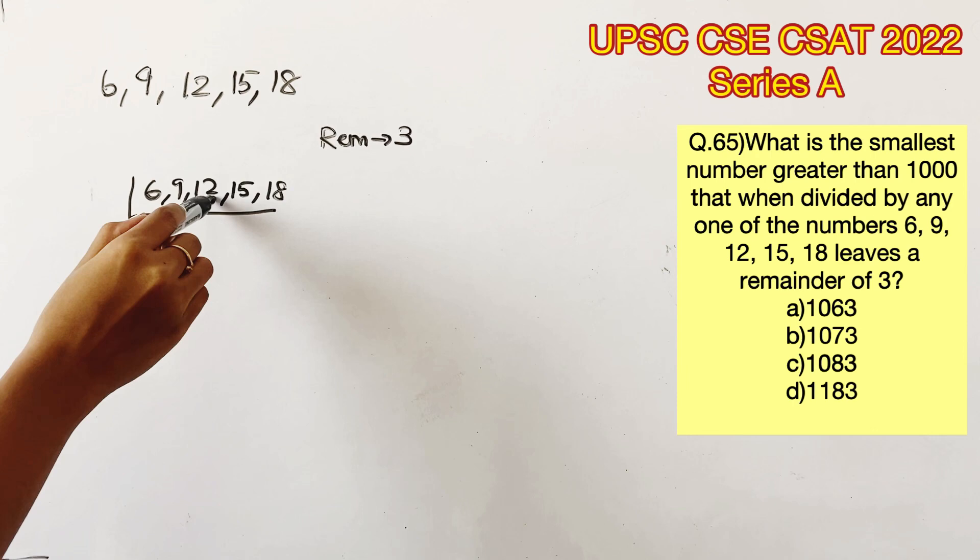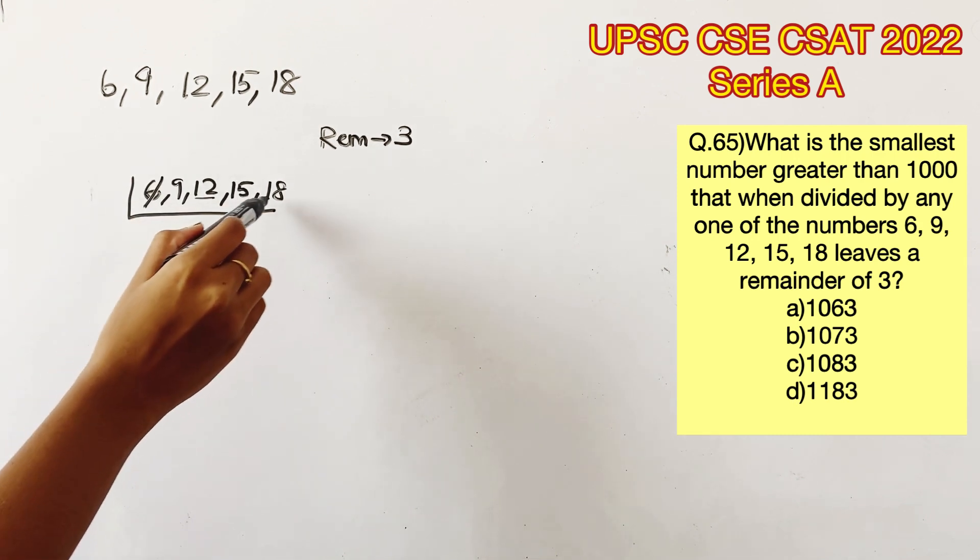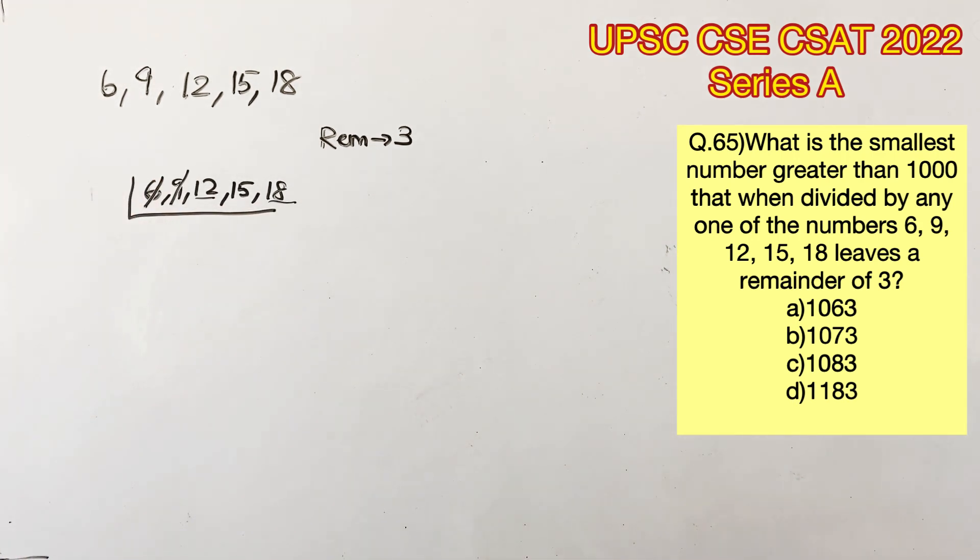If you see here, 6 is a factor of 12, and 9 is a factor of 18. So we don't need to include them. We can just find the LCM of 12, 15, and 18.